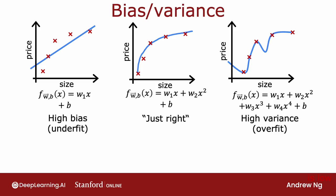Because this is a problem with just a single feature x, we could plot the function f and look at it visually. But if you had more features, you can't plot f and visualize whether it's doing well as easily. So instead of looking at plots, a more systematic way to diagnose whether your algorithm has high bias or high variance is to look at the performance of your algorithm on the training set and on the cross-validation set.